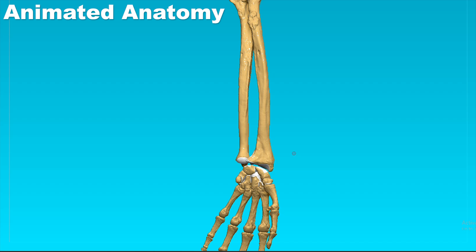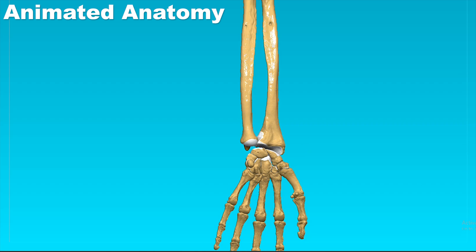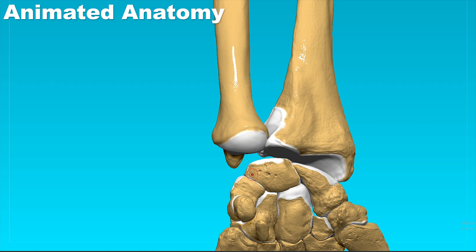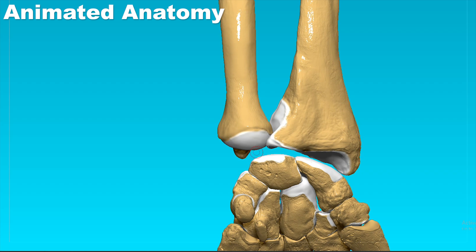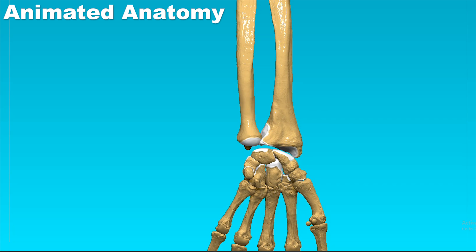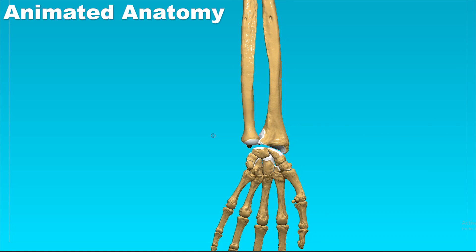Down there we can see that the ulna is a little bit further away from the wrist bones, and that's because there is an articular disc here that serves for better articulation of the ulna and the wrist bones.